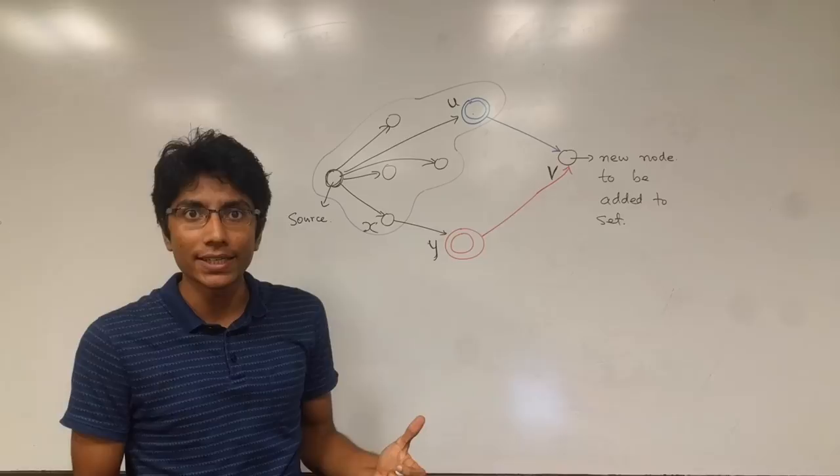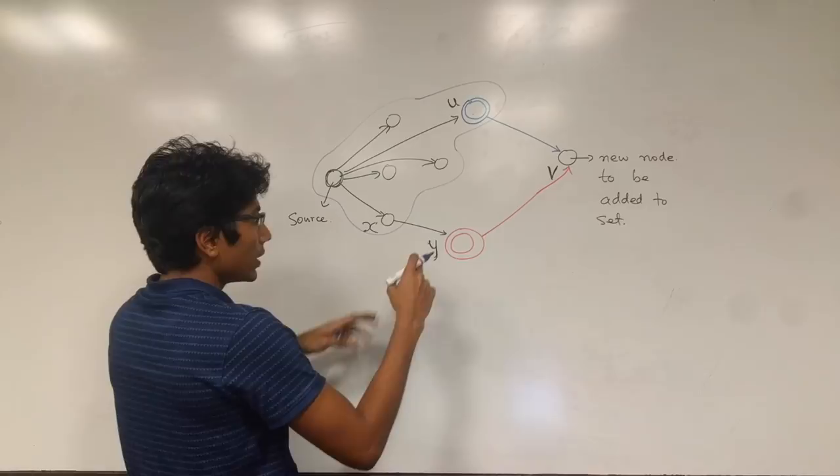The first thing is that there exists a node y which you could have gone through and got a better path up to v. Better path meaning shorter path.